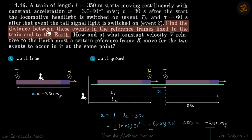Let's first find the distance between these events in the reference frame of the train. With respect to the train, if you sit on the train itself, you see that the headlight is turned on, and after some time, the tail light is turned on. So one event happened at one position and the other event happened at another position along the train.